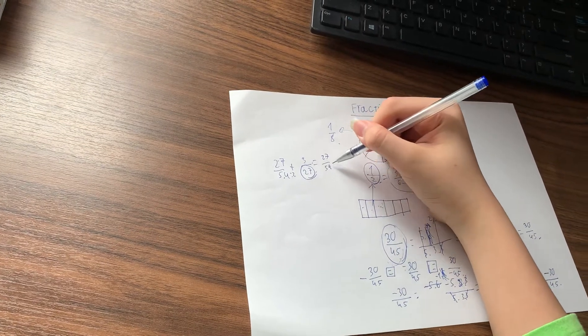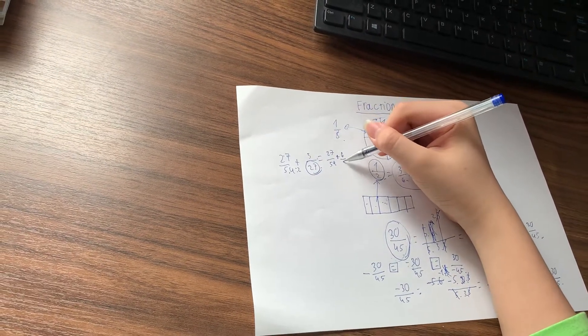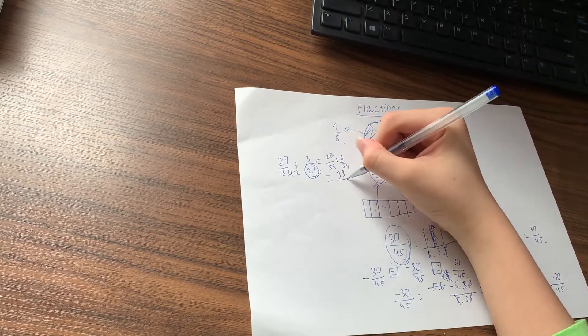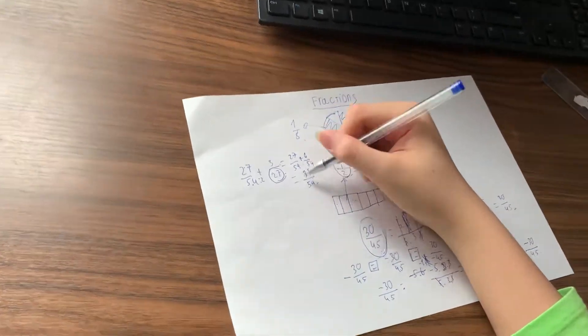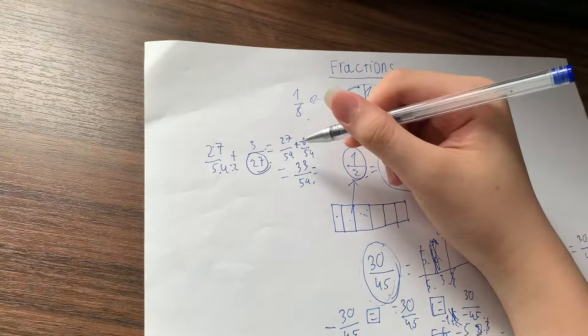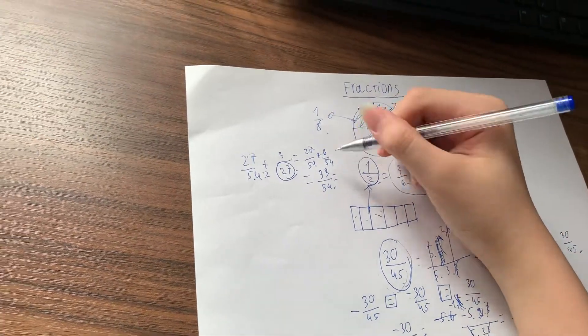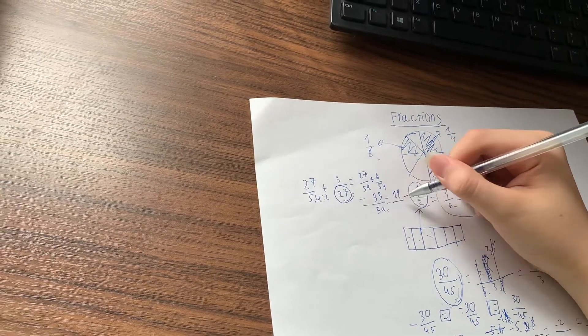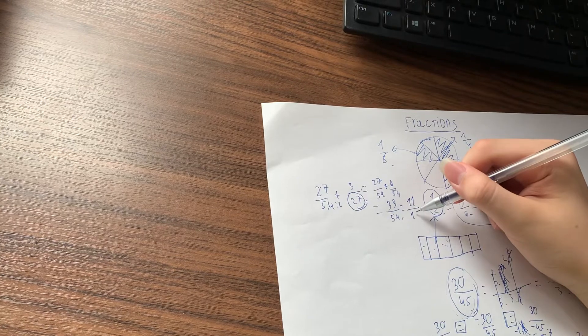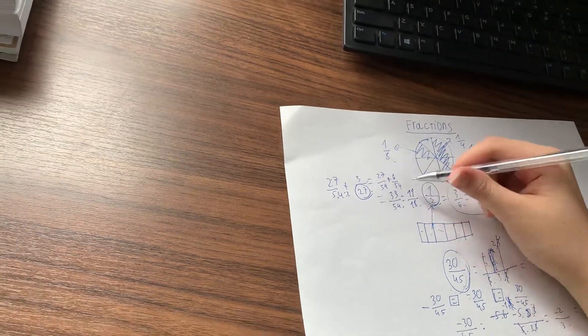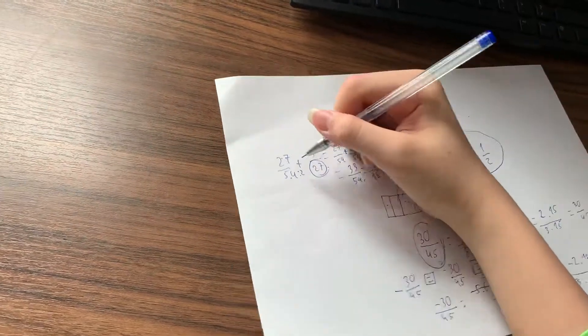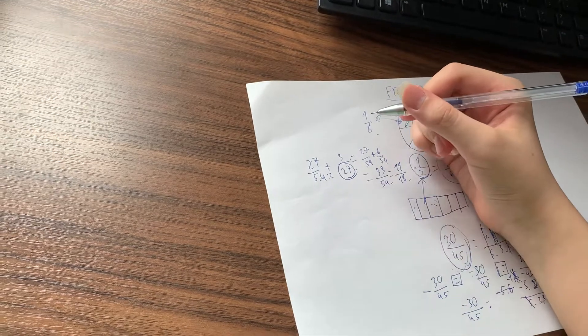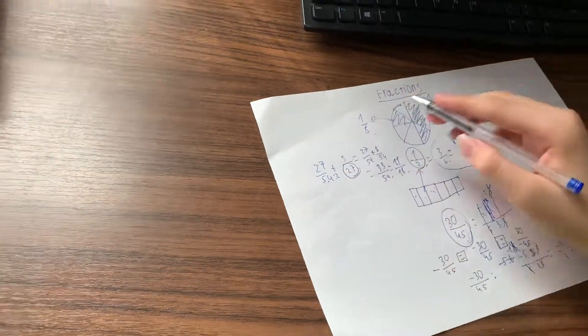So, 27 over 54, plus 6 over 54, is 33 over 54. So, this is divisible by 3. So, it's equal to 11 over 18. And this is the exact number you will get when you try to do this. This is the harder way to do it. Have a simpler way. Well, you have to take it all to 18, so it's still more complicated.